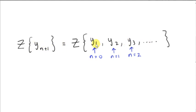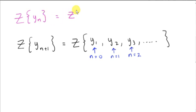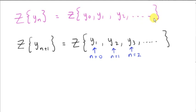Now let's see how this sequence relates to the sequence y sub n. I'm going to write down the z transform of y sub n — we'll be using that in the result. When n equals 0 we get y0; when n equals 1 we get y1; when n equals 2 we get y2, and so on. Notice that we could have got this sequence y sub n plus 1 by shifting y sub n one step to the left. So y1 would take the position of y0 — effectively we're eliminating y sub 0 — and our new first position is y sub 1.